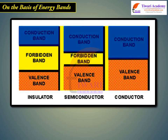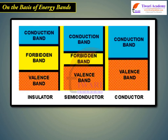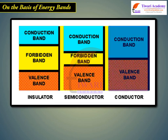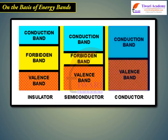Normally, the conduction band is empty. But when it overlaps on the valence band, electrons can move freely into it. This is the case with metallic conductors.